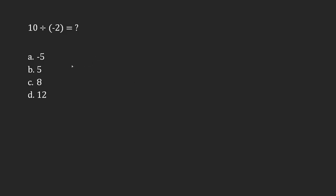Just like with multiplication, when I'm doing division, a positive divided by a negative — like I've got here, positive 10 divided by negative 2 — because these are mixed signs, it gives me a negative result. If I had negative divided by positive, again, I would have a negative result.